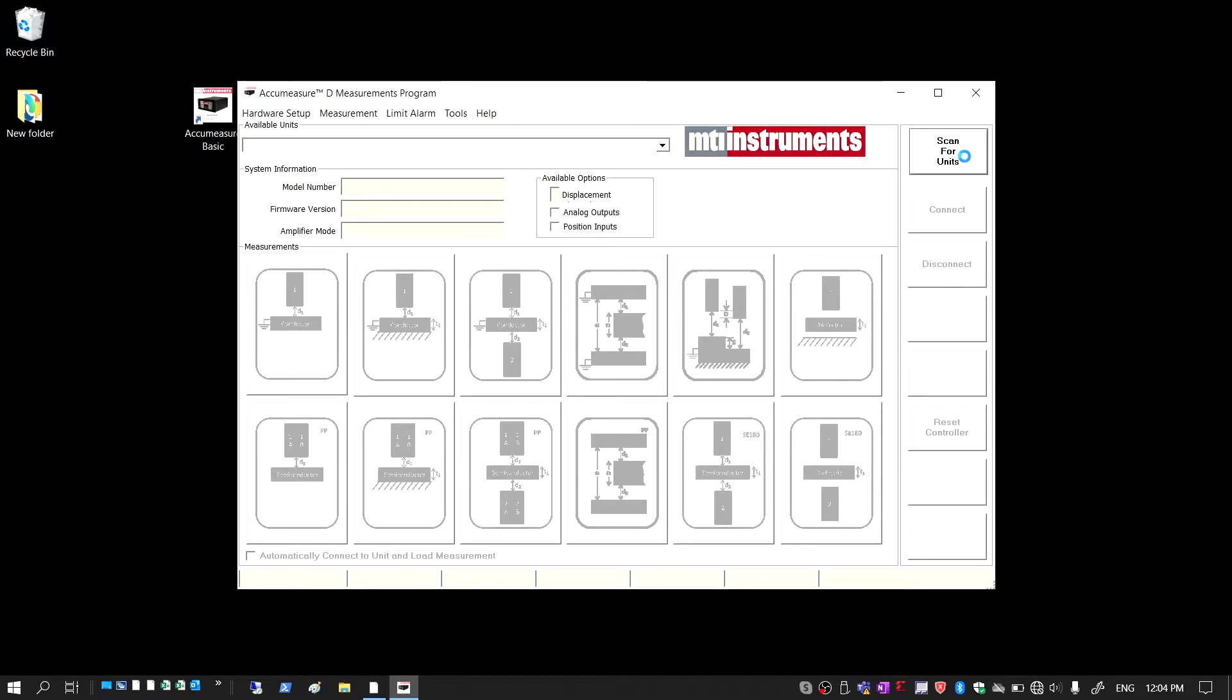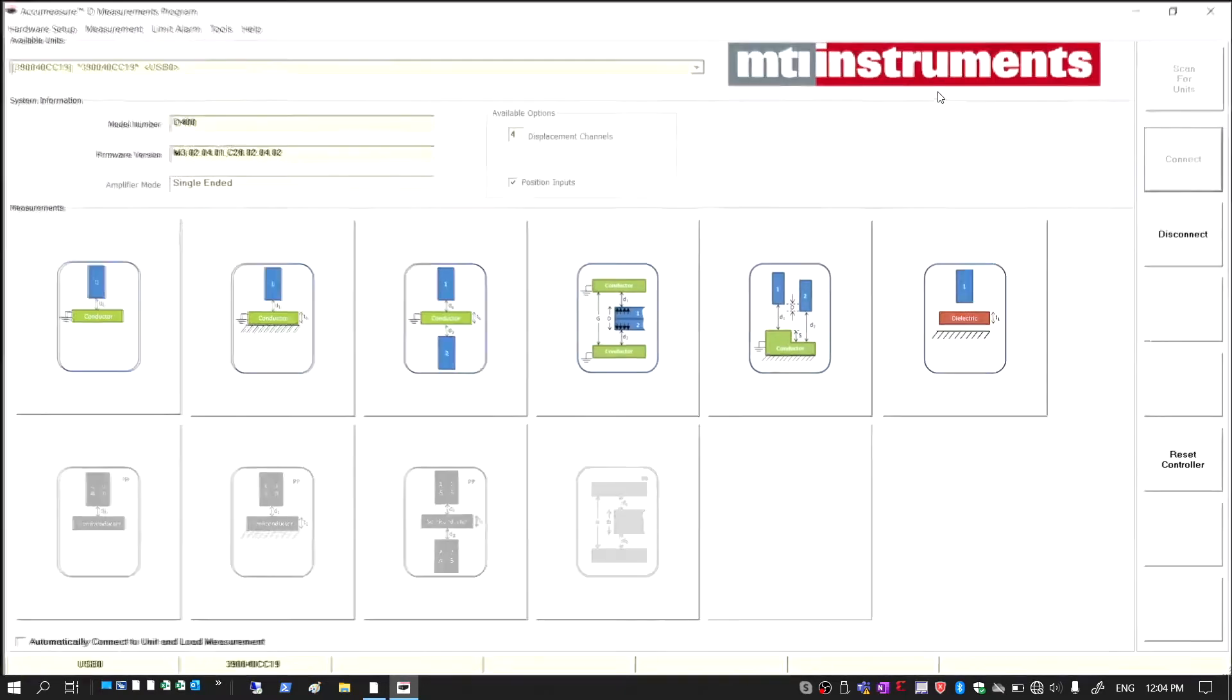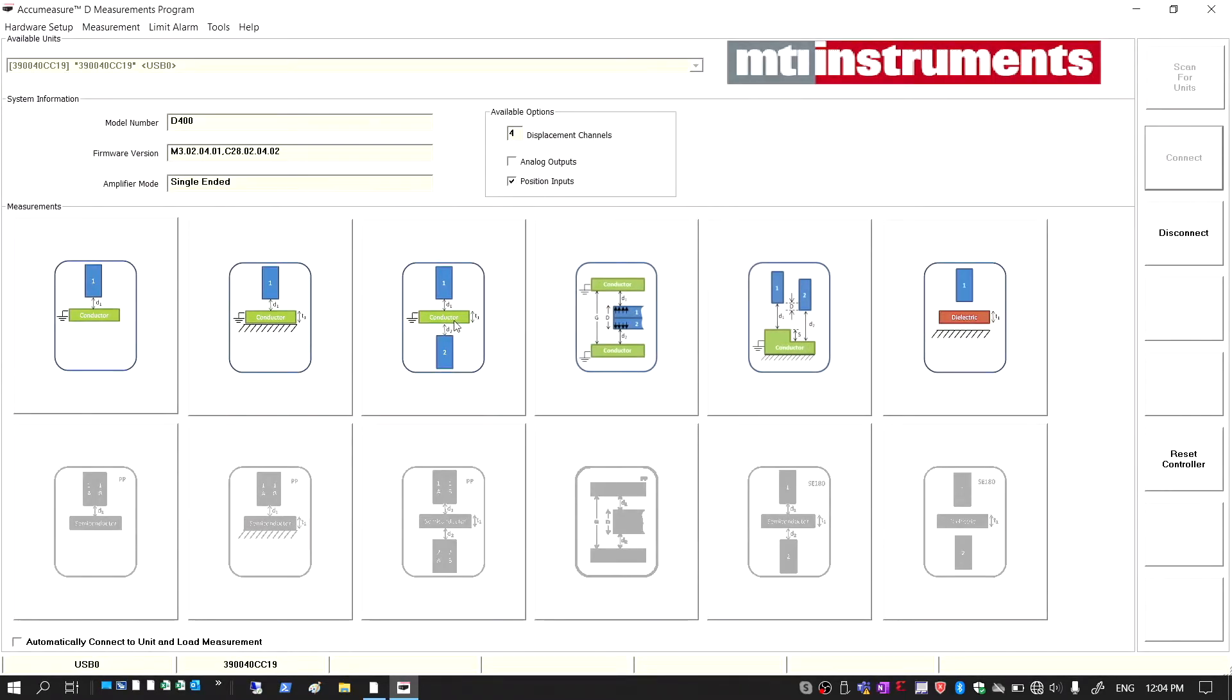We're going to scan for units and then click on the connect button. We're going to select the third option, which is the thickness measurement.